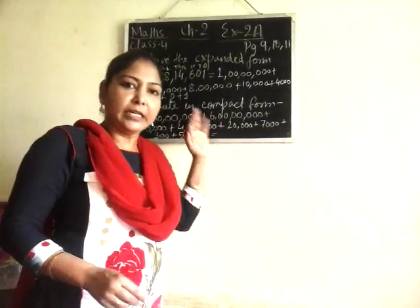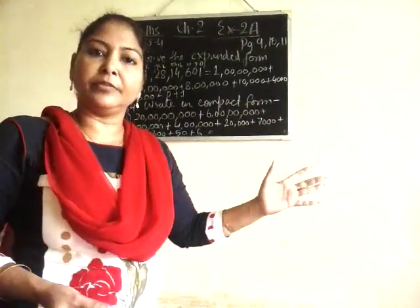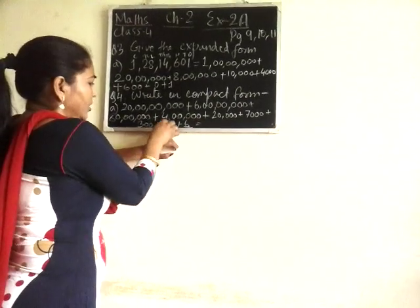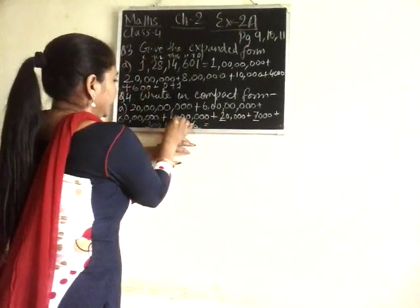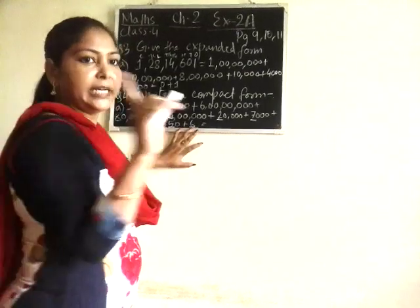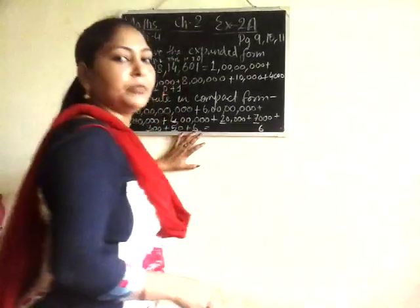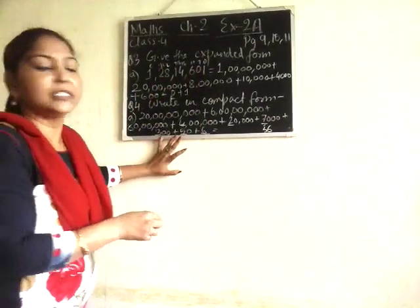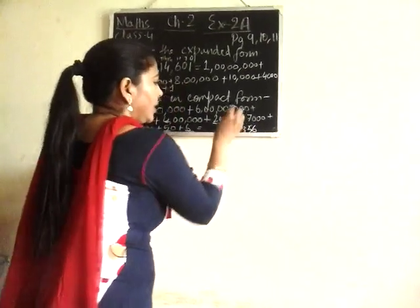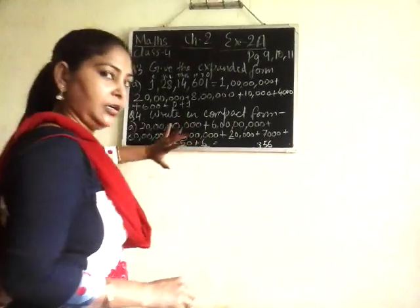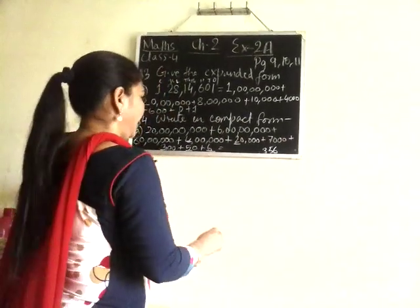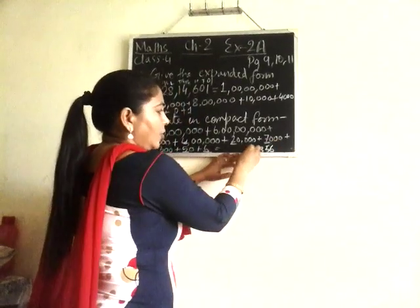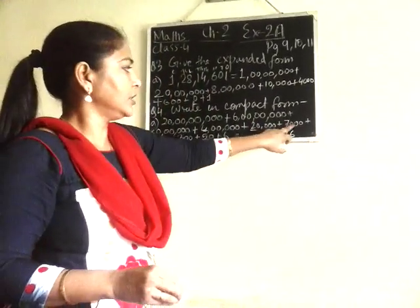Now in question number 4 it is just the reverse case. Expanded form is given and you have to write it in compact form, in the short form. What you will do is underline all the digits first. Then write them: this one is a single digit so it will go in ones place — start writing from the right side. Then this is two digits, that is in tens place, so 5. Then this one is three digits. Once the ones period — hundreds, tens, and ones place value — is done, we move to the next one. It is a four-digit number, that means it is in thousands place, so seven thousand. Then twenty — this is twenty thousand. So twenty-seven thousand done.